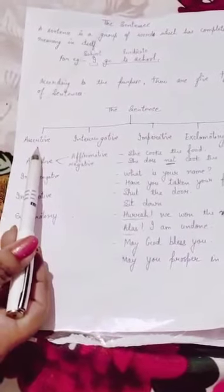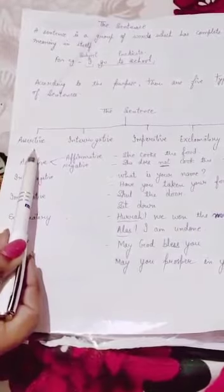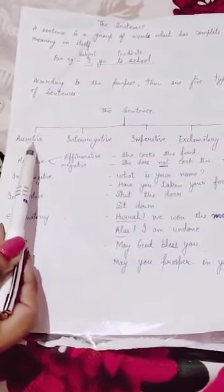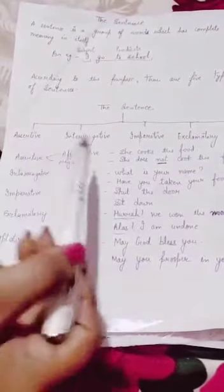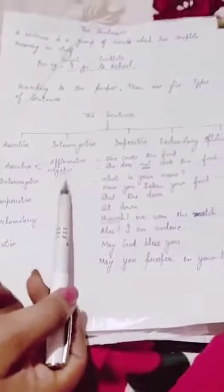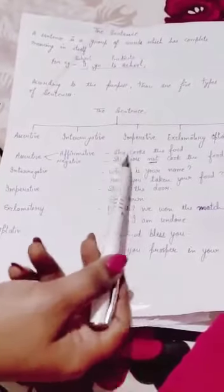The first type of sentence is assertive sentence. They are also called declarative sentences. They are called so because they make a statement. If the statement is positive, it is an affirmative sentence and if the statement is negative, it is a negative sentence.